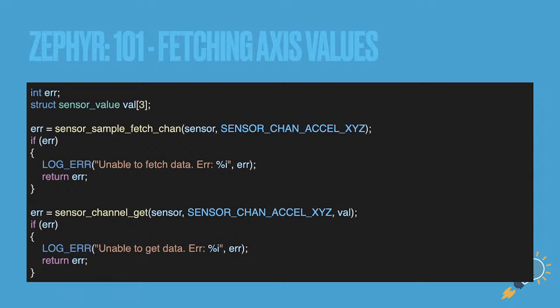We use sensor_sample_fetch_channel, fetching from the X, Y, Z channel. You can use an array and feed that into the sensor_channel_get function. The fetch call gets the data from the device itself, and then the get call is where we're actually pulling the data from memory and filling it up. That's the way to always get data from the device.